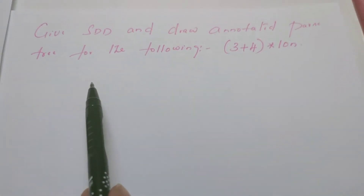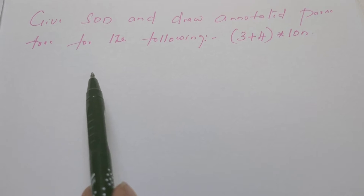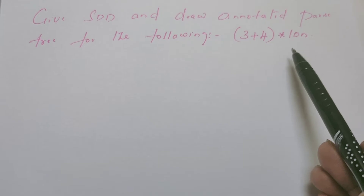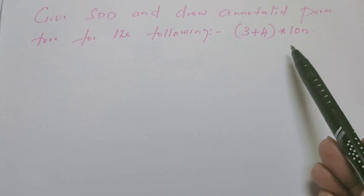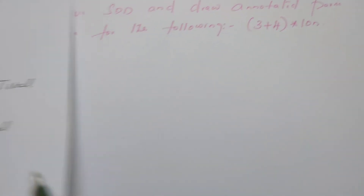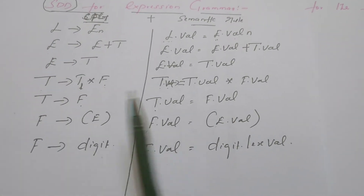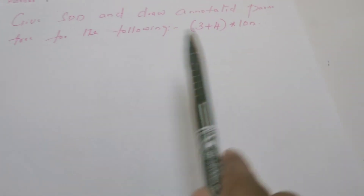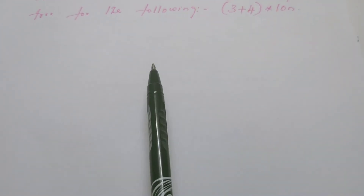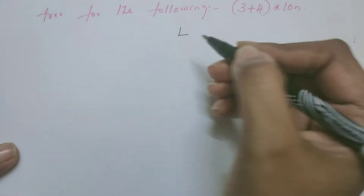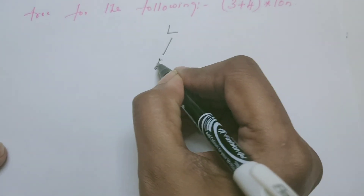Now a question: given an expression, draw the annotated parse tree. Since this is an expression, we need the expression grammar to draw the parse tree. We already have the SDD for the expression grammar with its semantic rules. The first thing we need to do is construct the parse tree for the given expression as per the grammar. The root of the parse tree is L.